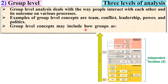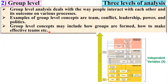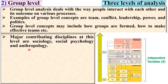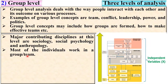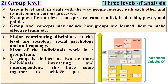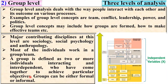Group level concepts may include how groups are formed and how to make effective teams. Major contributing disciplines at this level are sociology, social psychology, and anthropology. Most individuals work in a group or team. A group is defined as two or more individuals interacting and interdependent who have come together to achieve particular objectives, where groups can be either formal or informal.